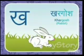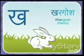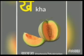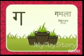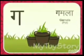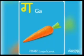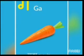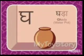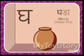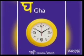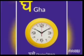So children — ख से खरगोश, खरगोश मतलब Rabbit. ख से खरबूजा — खरबूजा मतलब Musk Melon. ग से गमला — गमला मतलब Pot. ग से गाजर — गाजर मतलब Carrot. घ से घड़ा — घड़ा मतलब Water Pot. घ से घड़ी — घड़ी मतलब Watch.